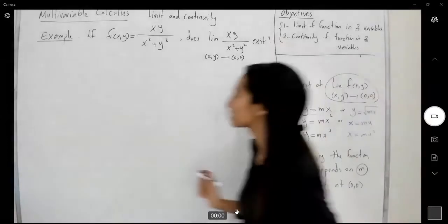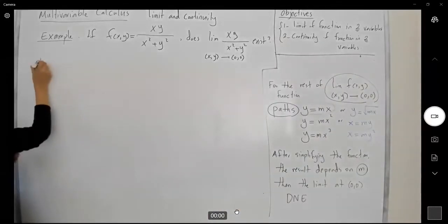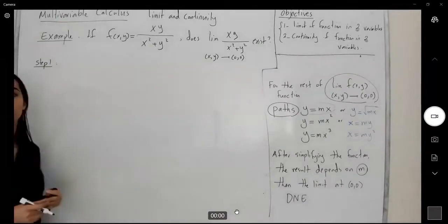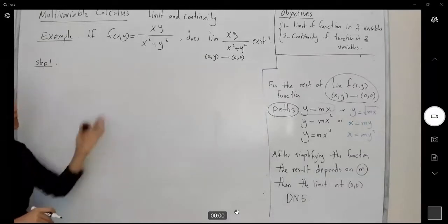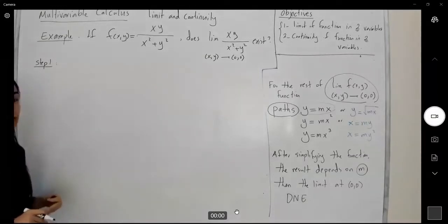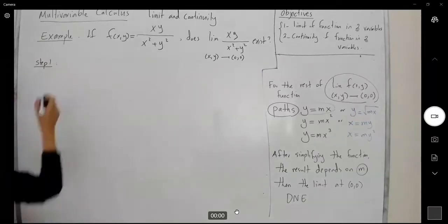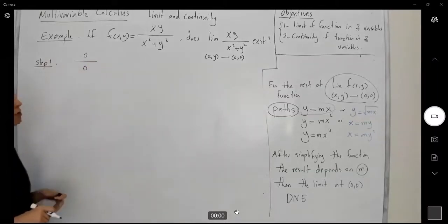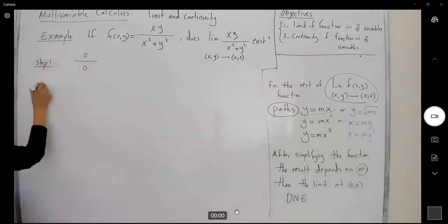We're going to follow our steps. Step one: check to see if plugging in zero and zero into the function gives you valuable information. Remember that the domain doesn't include (0,0). If you plug in zero and zero, you get 0/0, which is indeterminate form. So we have to move on to the next step.